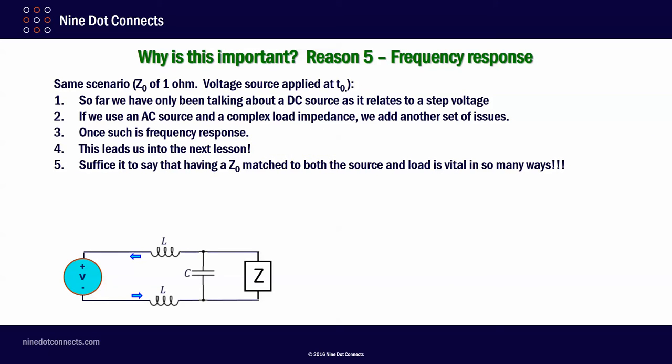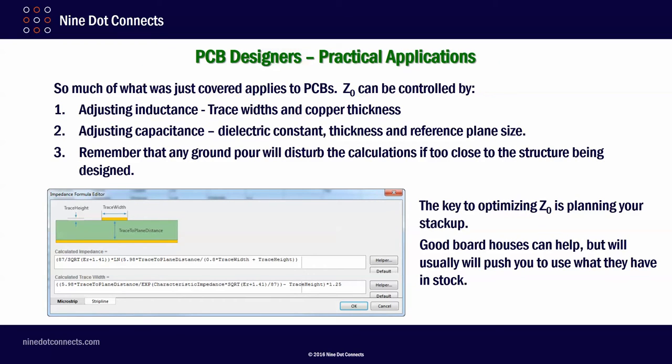Reason number five, frequency response. So far, we've only been talking about DC sources, or a DC source, as it relates to a step voltage. But if we use an AC source and a complex load impedance, we add another whole set of issues. One of those is frequency response. This would lead us into another whole lesson. Suffice it to say that having Z0 matched to both the source and the load is vital in many ways.